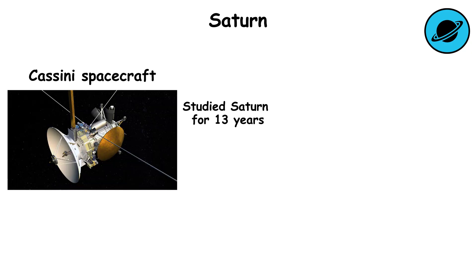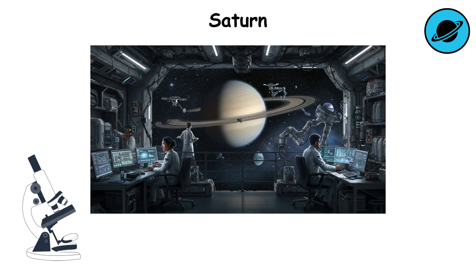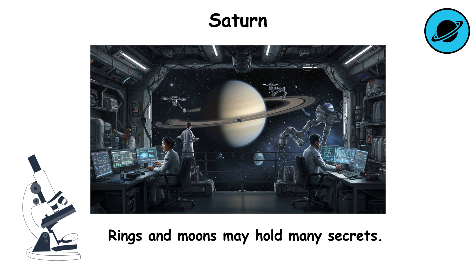The Cassini spacecraft studied Saturn for 13 years, taking stunning images. It remains one of the most beautiful planets in our system. Saturn continues to be an object of future space exploration, as its rings and moons may hold many secrets.